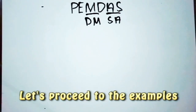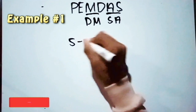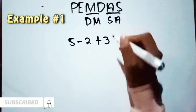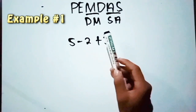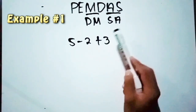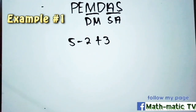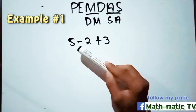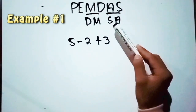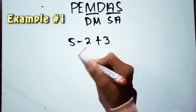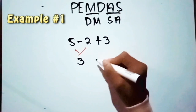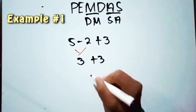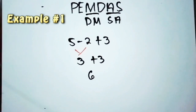Also, you can perform S before A — it just depends on the given problem and what operations are on the left side. Let's try an example: 5 minus 2 plus 3. There are two operations here so we'll use PEMDAS. Since there are no P, E, M, or D, we proceed to A and S. But S is already on the left side, so we use S then A. 5 minus 2 equals 3, then 3 plus 3 equals 6. So 6 is the answer.